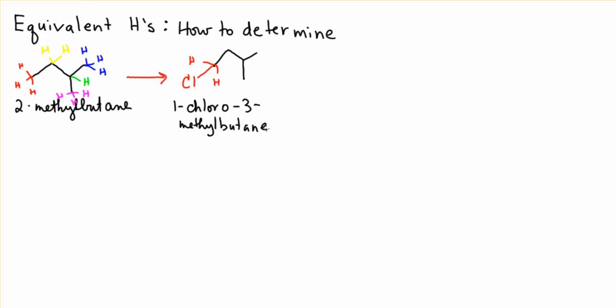Let's replace one of the yellow ones. Now we get 2-chloro-3-methyl-butane. If we replaced any of the hydrogens at that location with a chlorine group, we would also get 2-chloro-3-methyl-butane.